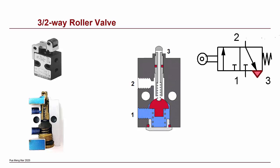When the roller valve is not activated, compressed air supply to port 1 is blocked. But port 2 and 3 are connected. That is, air can travel freely between the two ports. Note that port 3 is normally an exhaust port, air escaped to atmosphere through this port.